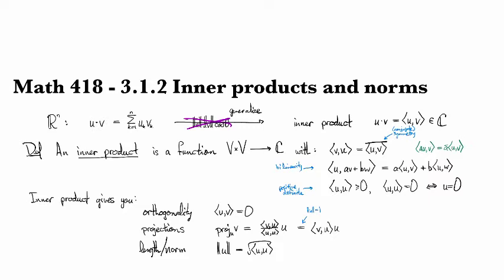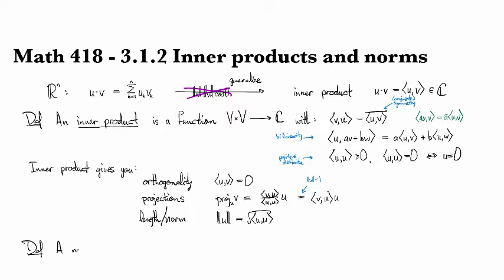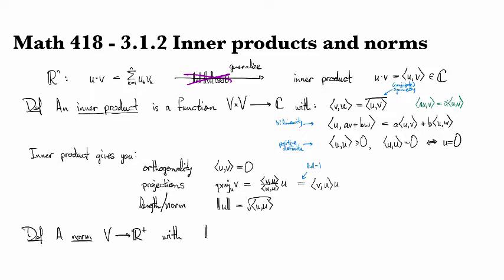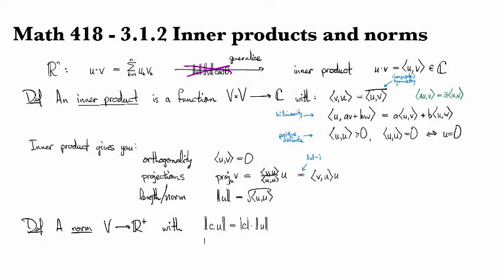And so what is a norm? A norm is a function. It takes a single vector, and it spits out a positive real number, and it has some properties of its own. So it is positive homogeneous, meaning that if you have a scalar multiple of a vector, then you can pull the scalar out in an absolute value. And it does not satisfy linearity. But if you have the norm of a sum, this is less than or equal to the sum of the two magnitudes. So this is a super important one, it's called the triangle inequality.